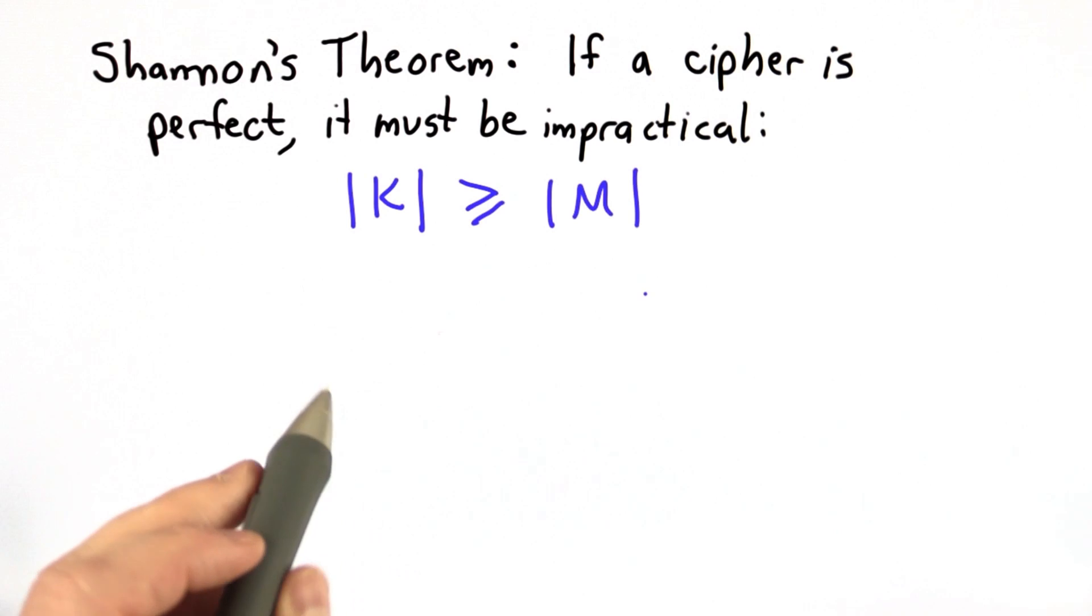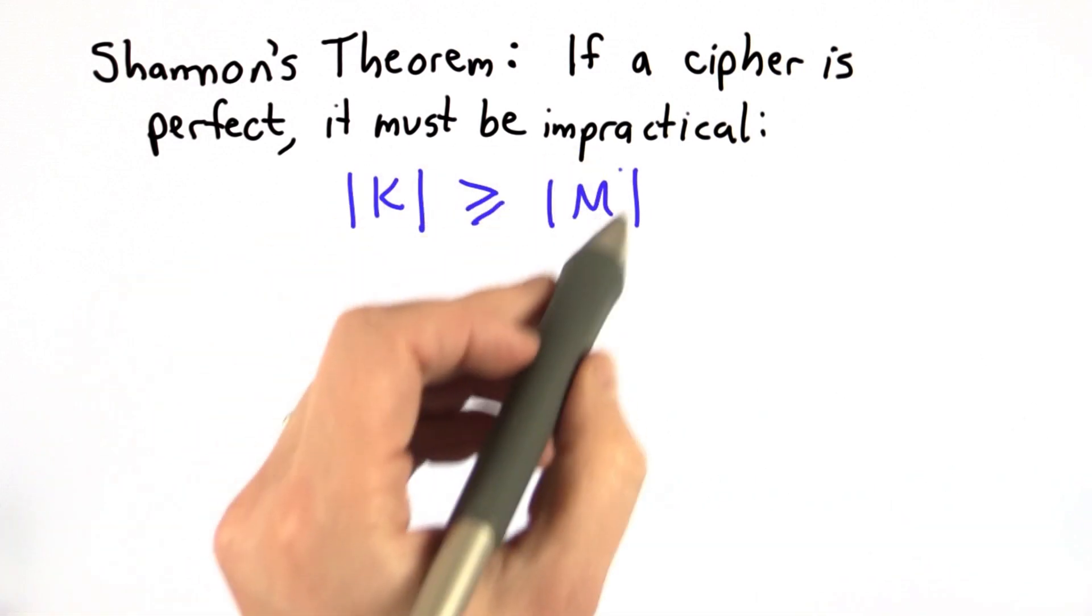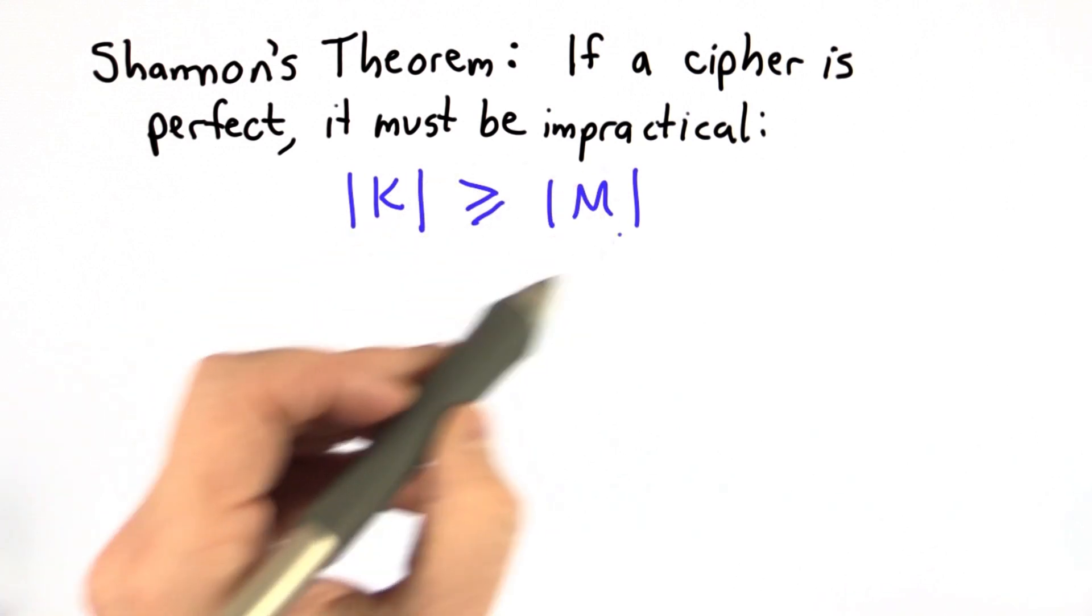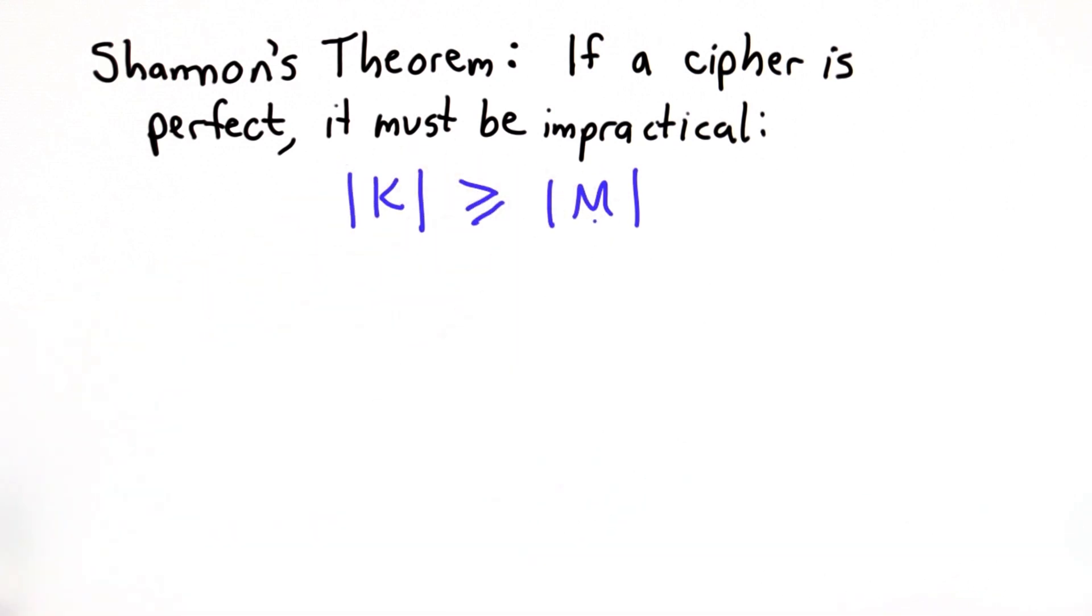We saw for the one-time pad that they were equal. We can always remove possible messages from the message set, so there's no problem with adding more keys. The problem is we need to have at least as many keys as messages.